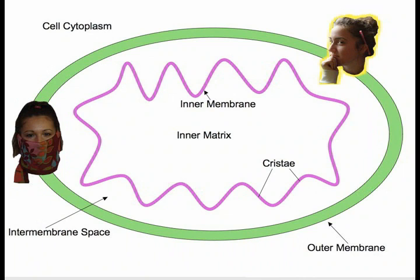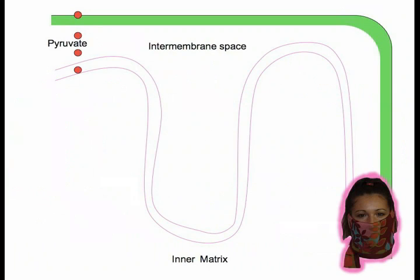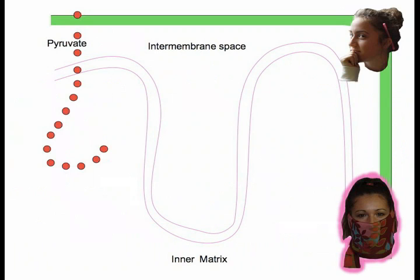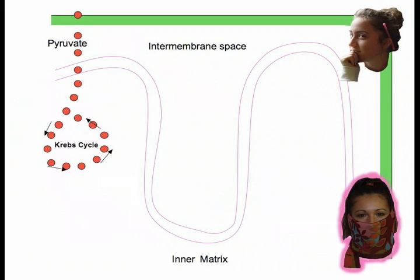Well how does it create so much ATP? Why don't we travel into the inner membrane space in order to take a closer look so I can teach you better. The process begins with pyruvate, formed from glycolysis, entering the inner matrix from the cytoplasm. Isn't this the Krebs cycle? Yes, exactly. During the Krebs cycle, pyruvate circles around the inner matrix and lets off byproducts, ATP and CO2.